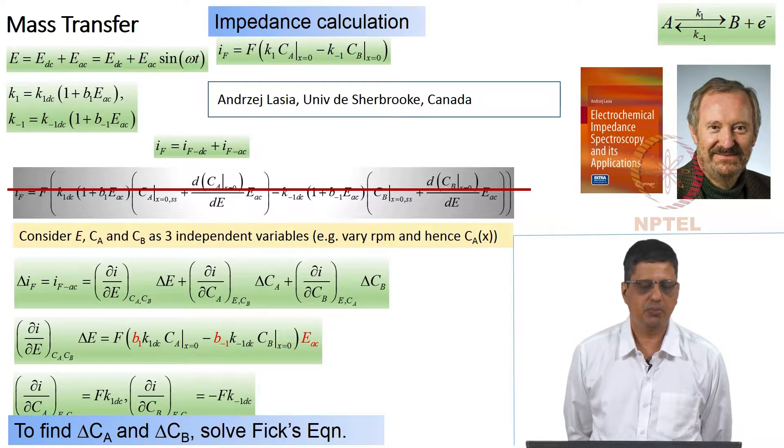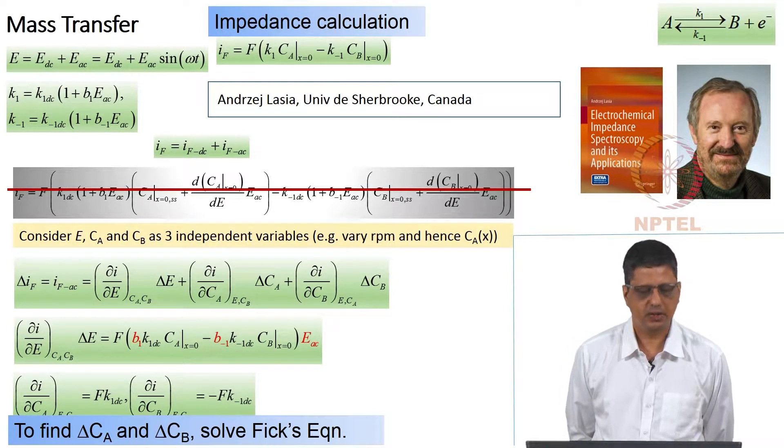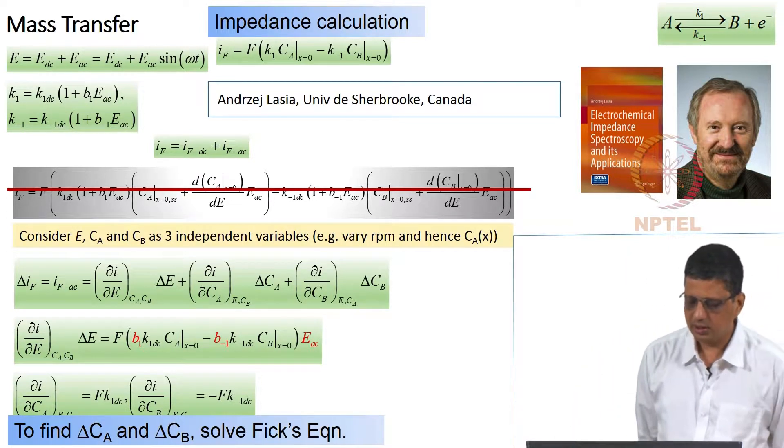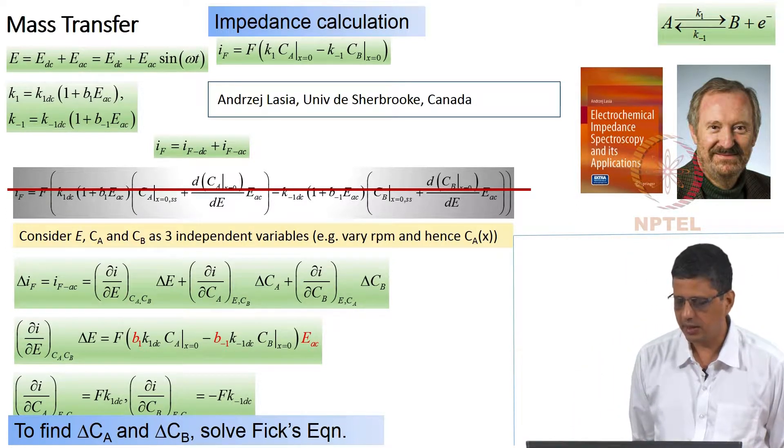K1 is written as K1_DC times (1 plus B1·E_AC), K_minus_1 in the same way. And there are multiple ways of deriving it. We are using the methodology that is given in the book by Lasia.